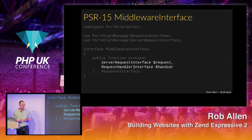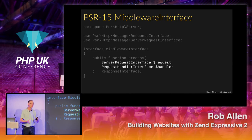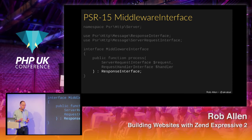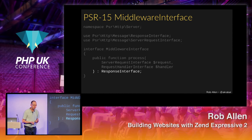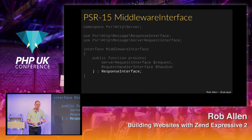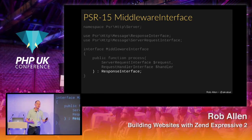You have to implement process to implement a component in the pipeline. This function takes two parameters: a request, which is a PSR-7 request object, and a handler, which is a pointer to the next element in the pipeline. You must return a response. As you can tell from this interface — it uses type hinting and return type hinting — it's a PHP 7 or above interface. If you're on 5.6, you need to be upgrading.